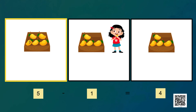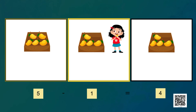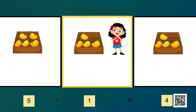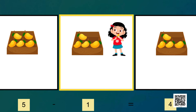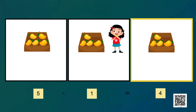This bucket has some mangoes — one, two, three, four, five. Yes, five mangoes. Preeti ate one mango out of these five, so five minus one — now there are four mangoes. Five minus one is equal to four.